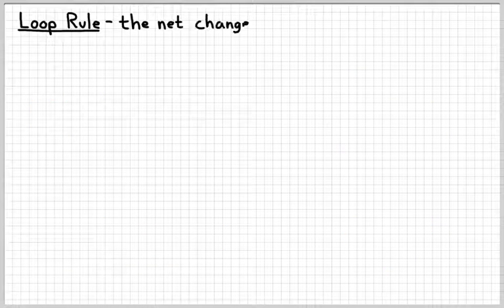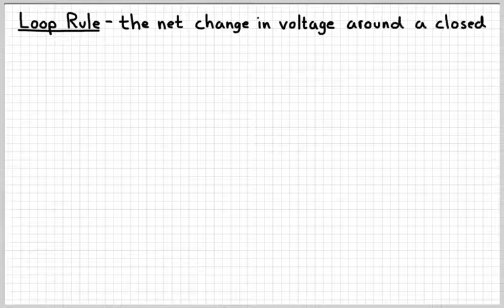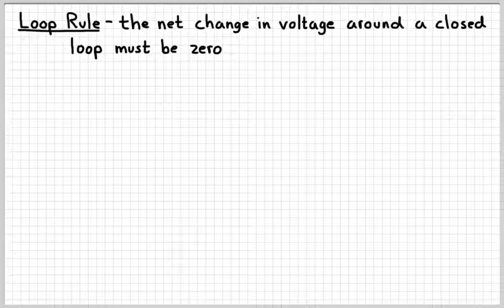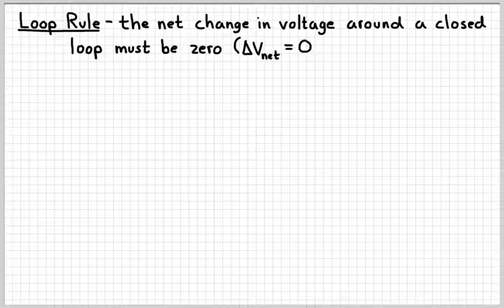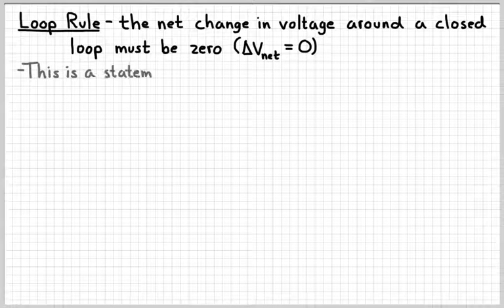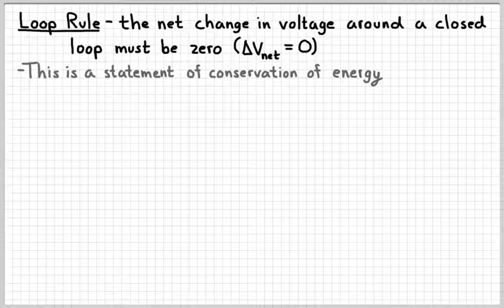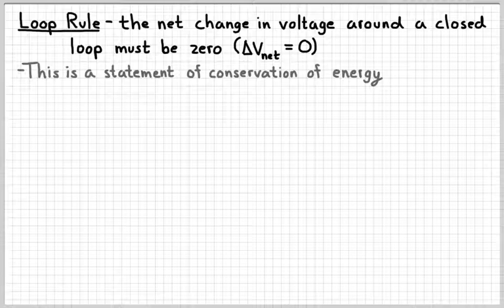The second of Kirchhoff's rules is referred to as the loop rule. The loop rule states that the net change in voltage around a closed loop must be zero. Remember that voltage is a measurement of energy — basically energy per charge — and so this is a statement of conservation of energy. The loop rule is simply a consequence of the fact that charges won't gain or lose energy other than through things that cause a voltage change.